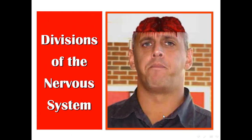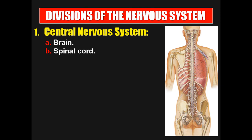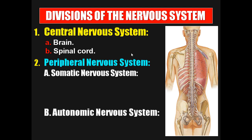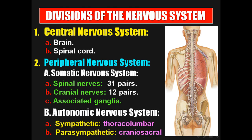The nervous system is divided into the central nervous system, formed of the brain and the spinal cord, and the peripheral nervous system. The peripheral nervous system is divided into the somatic part — formed by 31 pairs of spinal nerves, 12 pairs of cranial nerves, and associated spinal and cranial ganglia — and the autonomic part, which is either sympathetic (thoracolumbar) or parasympathetic (craniosacral).